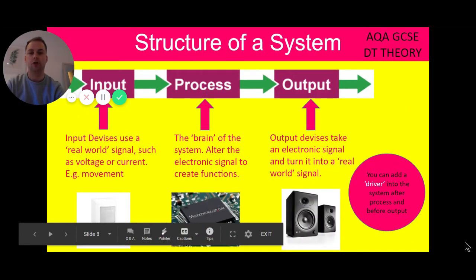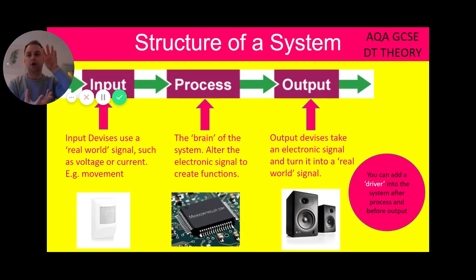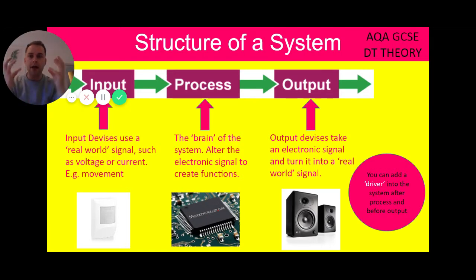So, structure of a system. I've identified three structures here, but there is one more which we'll go through once we've covered these first three. So first you've got your input. This is a device that uses a real world signal such as a voltage, current or movement.